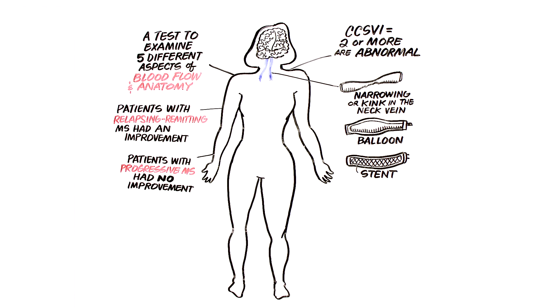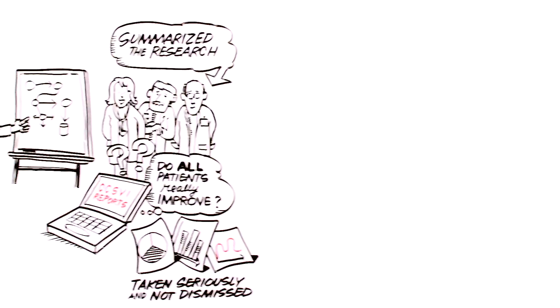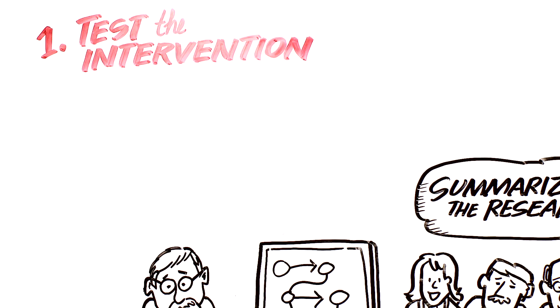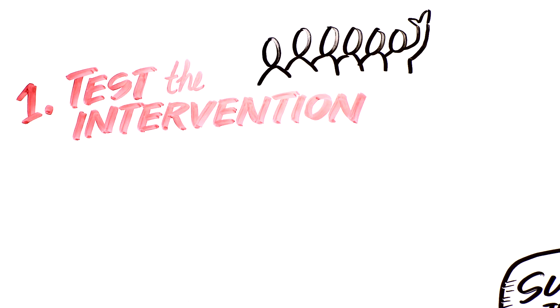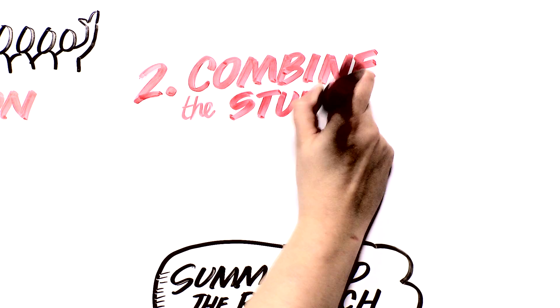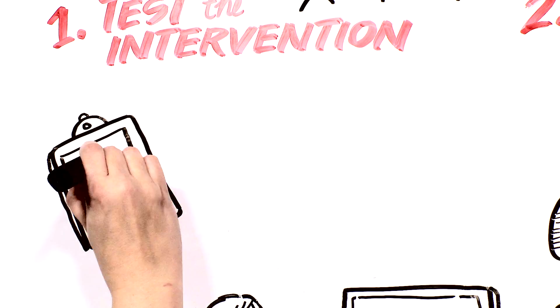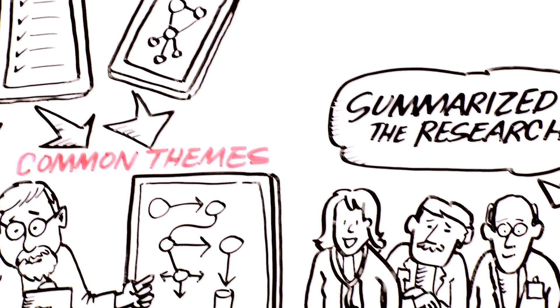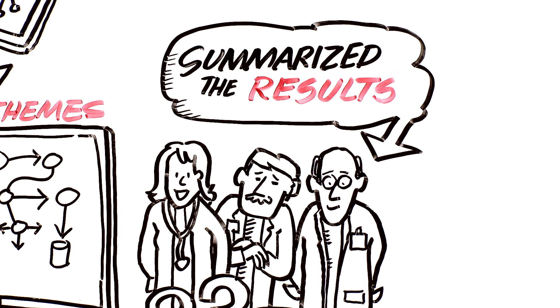In medicine, when faced with a new discovery, we tend to do two things. First, we test the intervention out on other people in other settings to see if we get the same result. And second, we combine all the studies to look for common themes. Our research group searched for all published studies of CCSVI that met certain criteria, and summarized the results.